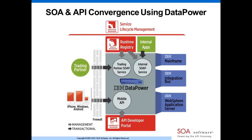Next question: what does Integration Bus offer in terms of integration patterns, volume, and speed? One pattern we see is customers putting DataPower in front of Integration Bus — Integration Bus handling sophisticated flows integrating with WebSphere MQ and WebSphere Application Server, while DataPower provides that high-speed security gateway with API and SOA functionality. For example, DataPower can rate-limit traffic — something Integration Bus would not be used for — protecting Integration Bus from consumers flooding the data center.